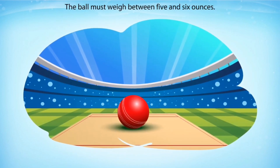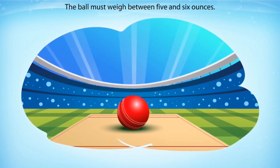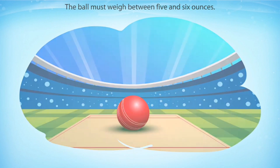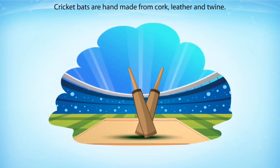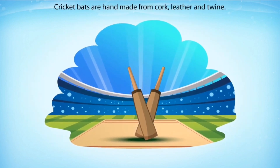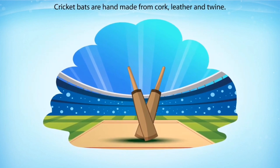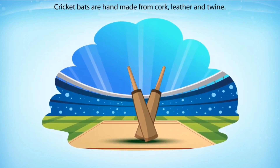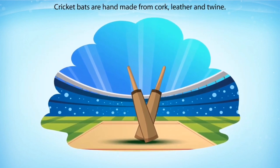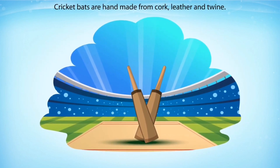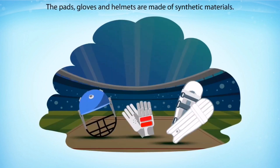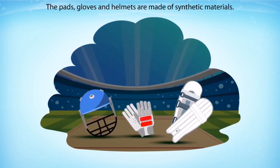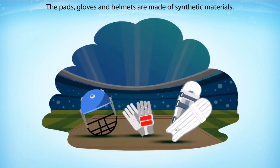The bat was made straight in 1774 and the first leg before wicket law was published. Even today, both the bat and ball are handmade. Once the bat was cut out of a single piece of wood; now it consists of two pieces. The bat is made out of willow wood. Plastic, fiberglass and metal are not used at all.